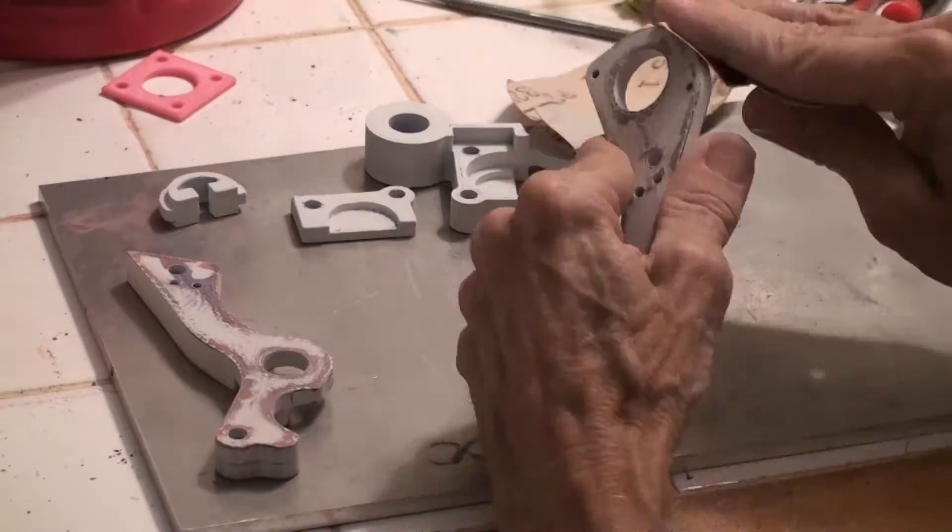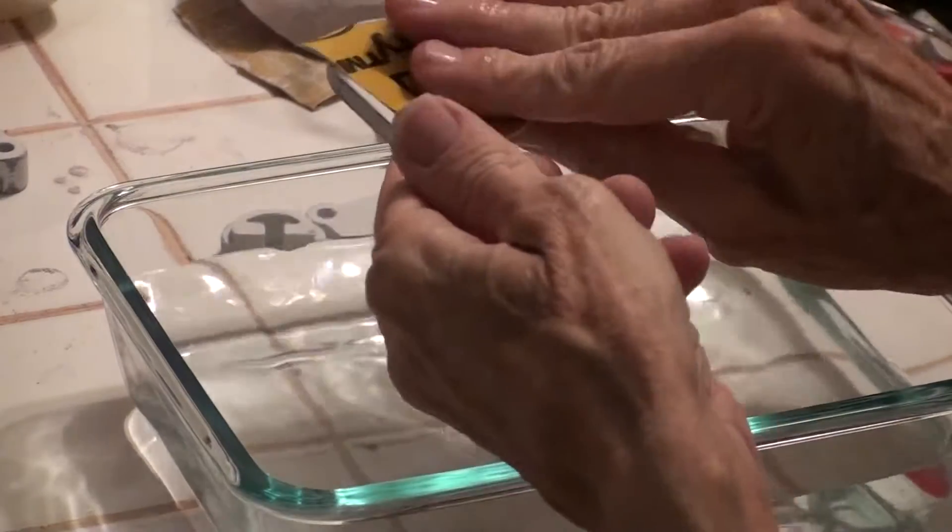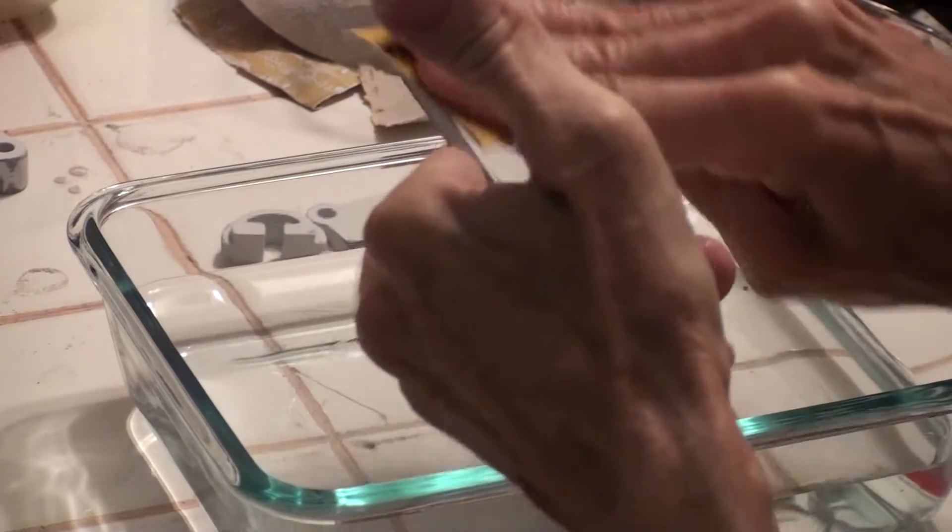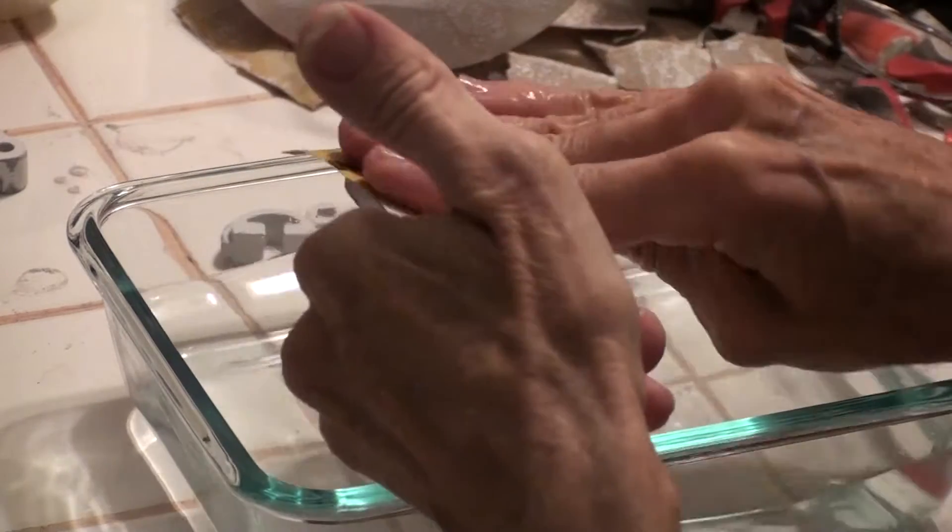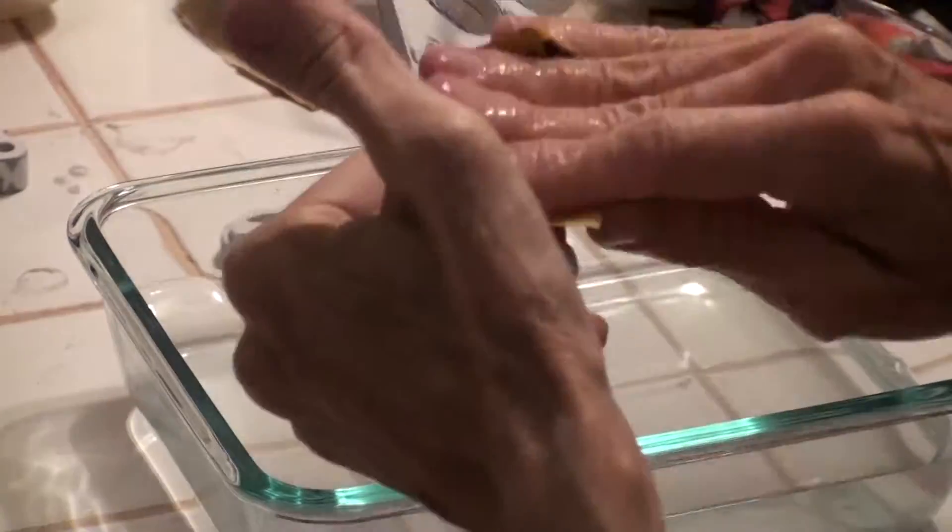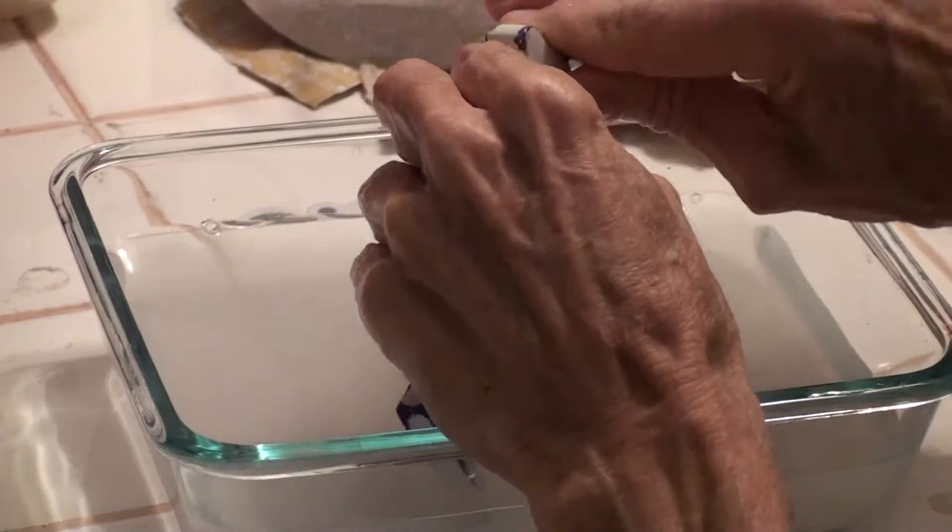After the final coat, I sand with progressively finer and finer sandpaper, winding up with 400 and then 800 grit wet or dry sandpaper. This you should always use wet. If you use it dry, it will load up quickly and you'll spend a fortune on sandpaper. But using it wet prevents it from loading up so much.